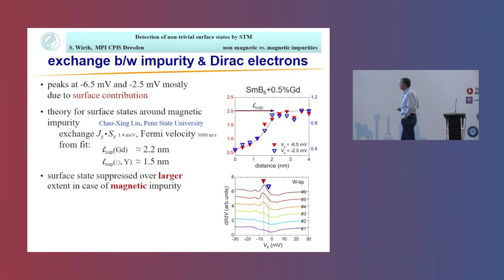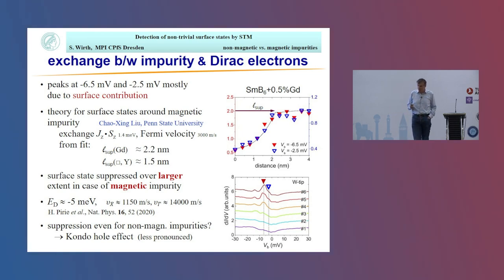Clearly the surface state is suppressed over a larger extent in case of the magnetic impurity. We can compare that to other results. There are nice measurements by Jenny Hoffman's group on the 2x1 reconstructed surface. What they get from quasi-particle interference imaging is the location of the Dirac cone at about -5 millielectron volts. With -5, if we have the additional exchange energy to overcome, we end up with the peak at -6.5 millielectron volts. Also our 3,000 meters per second for the Fermi velocity is between the two velocities she gave for different directions.